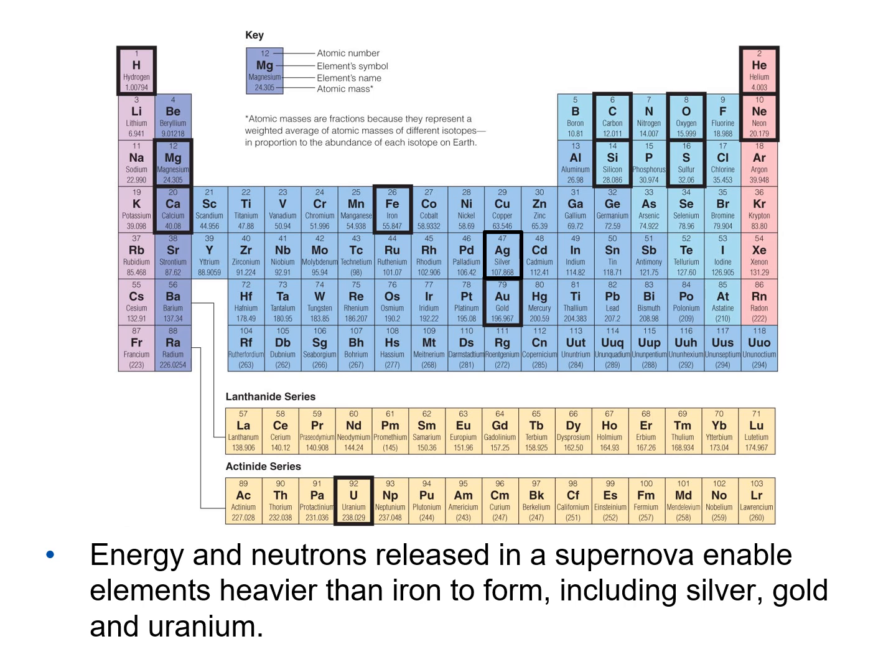The energy and neutrons released in a supernova enable elements heavier than iron to form, including silver, gold, and uranium. The supernova is such a highly energetic event that there is enough energy to fuse those heavier elements. All elements heavier than iron — cobalt, nickel, copper, silver, gold, and all others on the periodic table heavier than element 26 — are created in the explosive event known as the supernova.